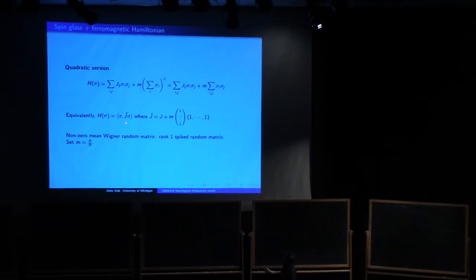So J of ij plus m is now your new matrix. So this Hamiltonian is again quadratic, but now quadratic part coming from this random matrix plus every entry is shifted by m. So it's non-zero mean random matrix, also known as rank one spiked random matrix, which was well studied.